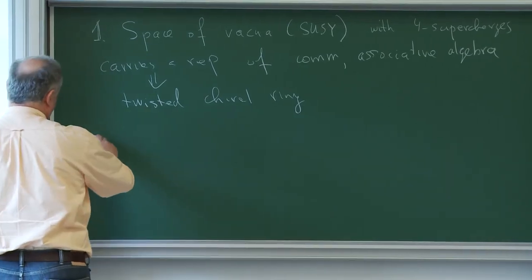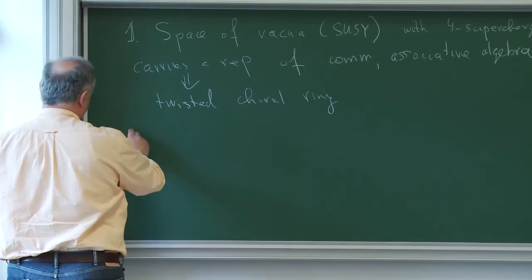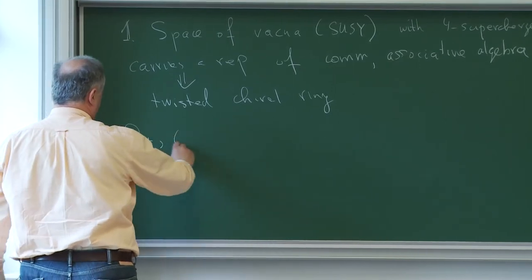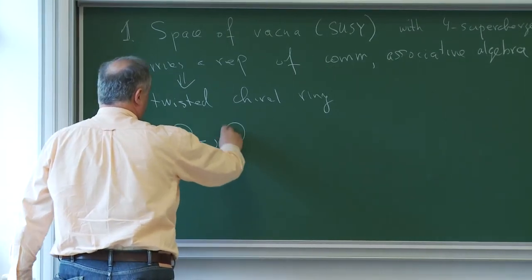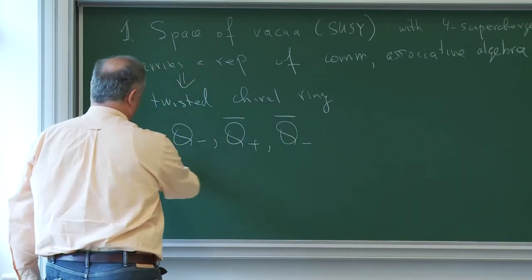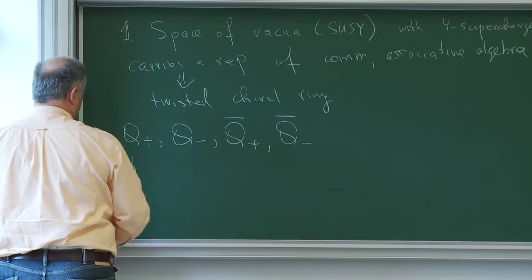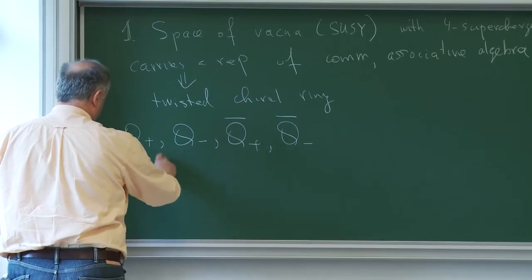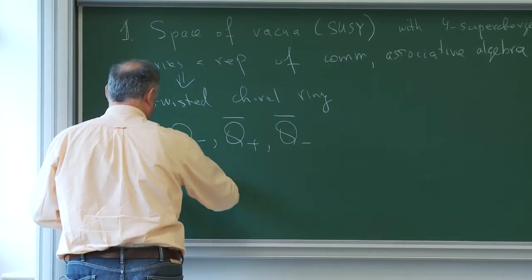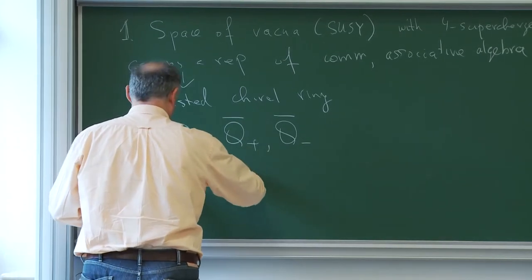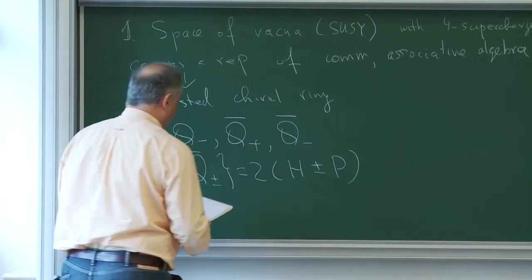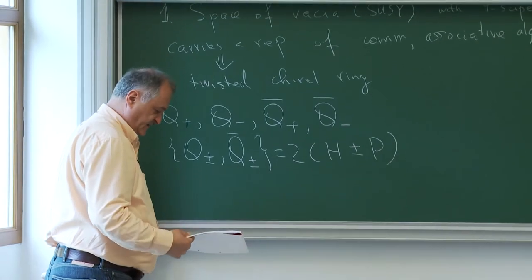In order to introduce it, we have to remember that four supercharges means that we have — let's label them — Q-plus, Q-minus, Q-plus-bar, and Q-minus-bar. This is just notation for four charges. The only non-trivial anti-commutation relation is: Q-plus-minus anti-commutator with Q-plus-minus-bar equals two times Hamiltonian plus or minus momentum. So this is the superalgebra; the rest is trivial.